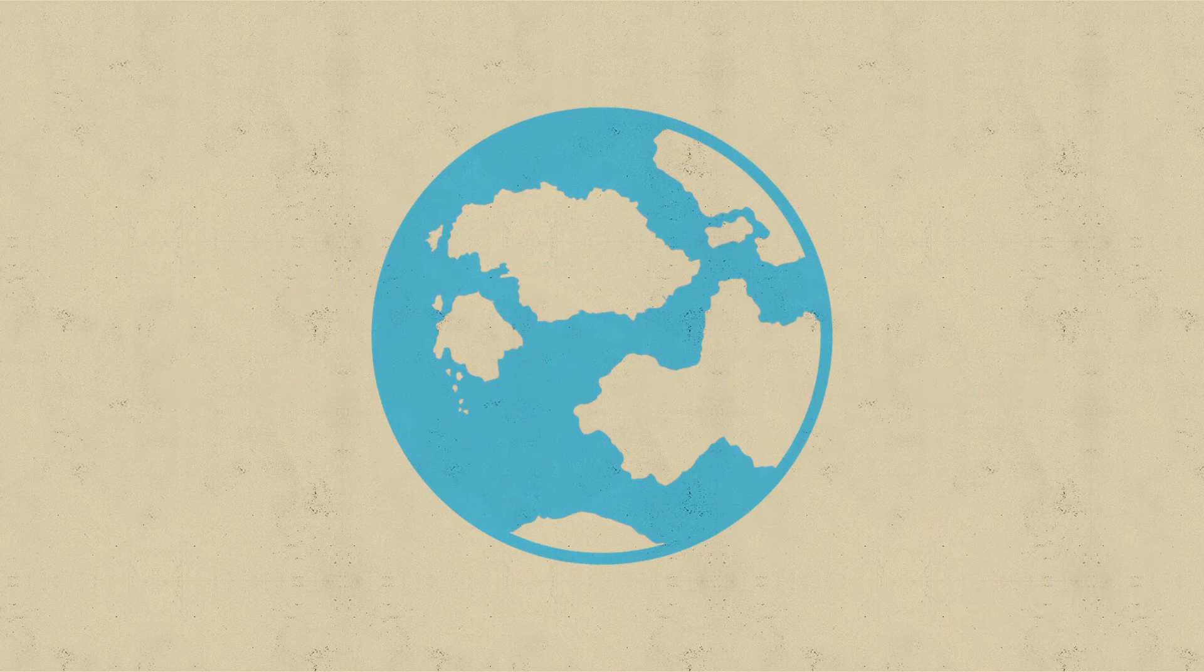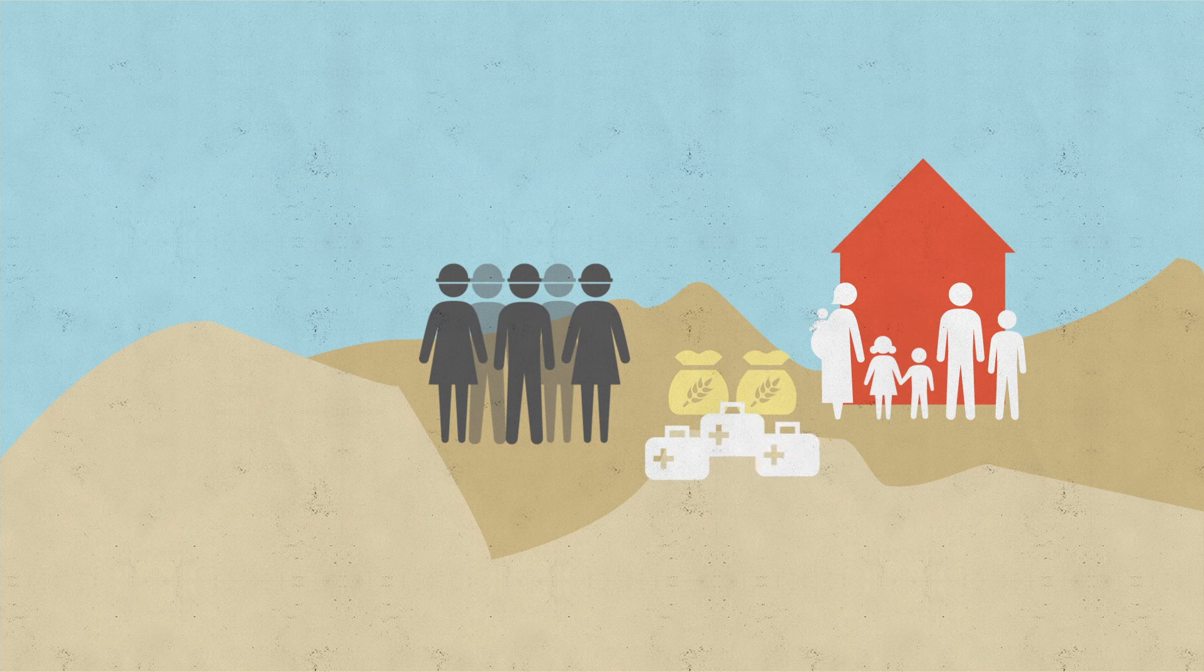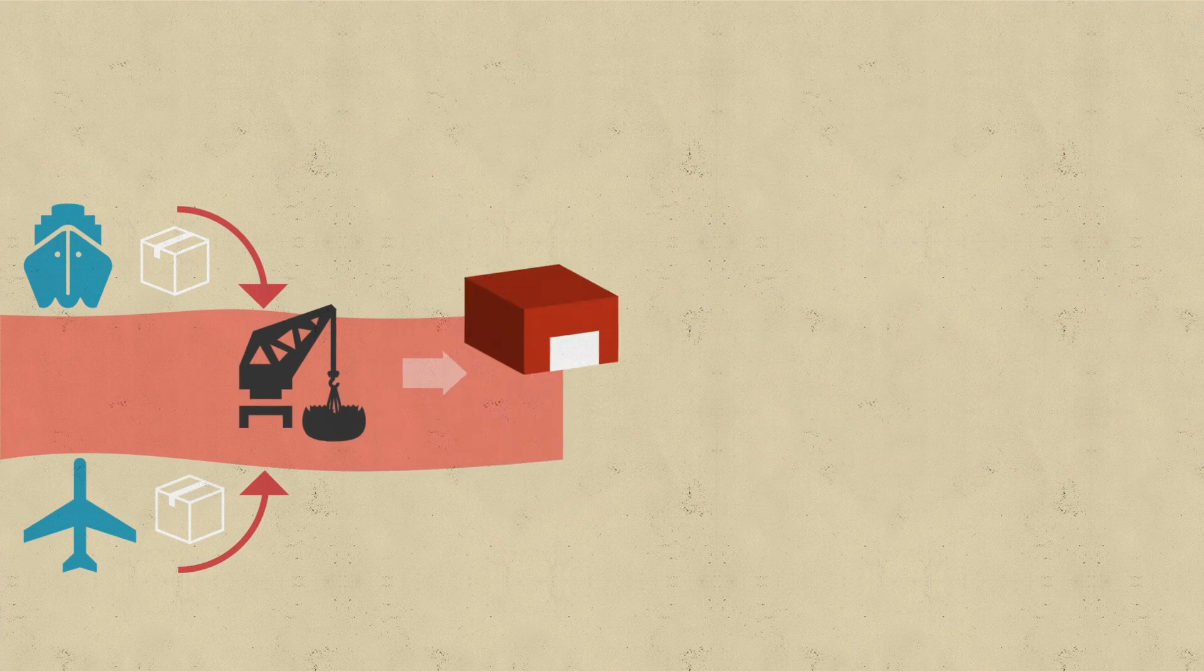Supplying aid in an emergency used to be mainly bringing in ships, planes, trucks, transporting items from overseas and then distributing to beneficiaries. In this way of working the supply chain looks something like this.